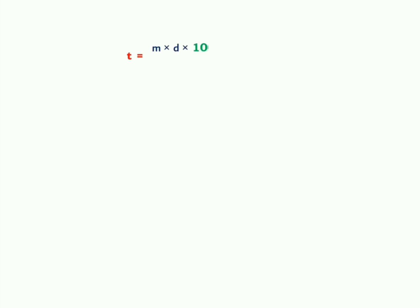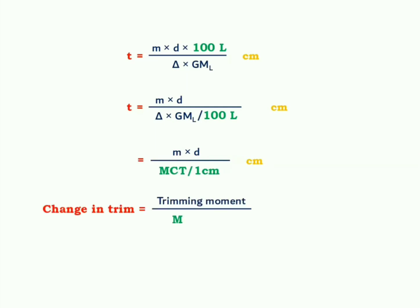Now, again I am writing the generalized expression for change in trim. The same can alternatively be written as m into d divided by delta into GM_L divided by 100L. Whatever we have got in the denominator in this case is well equivalent to MCT by 1 centimeter. So, this generalized expression can also be written as change in trim equals the amount of trimming moment it is experiencing divided by MCT by 1 centimeter.